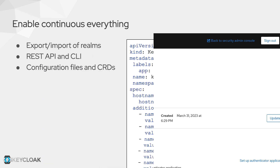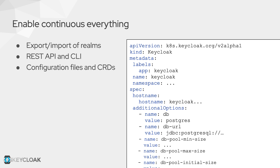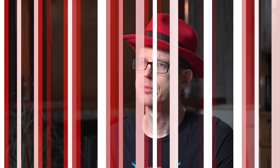At the same time, you have a REST interface and a command-line interface where you can automate all the things, and automating all the things is one of the key features of a cloud-native environment.